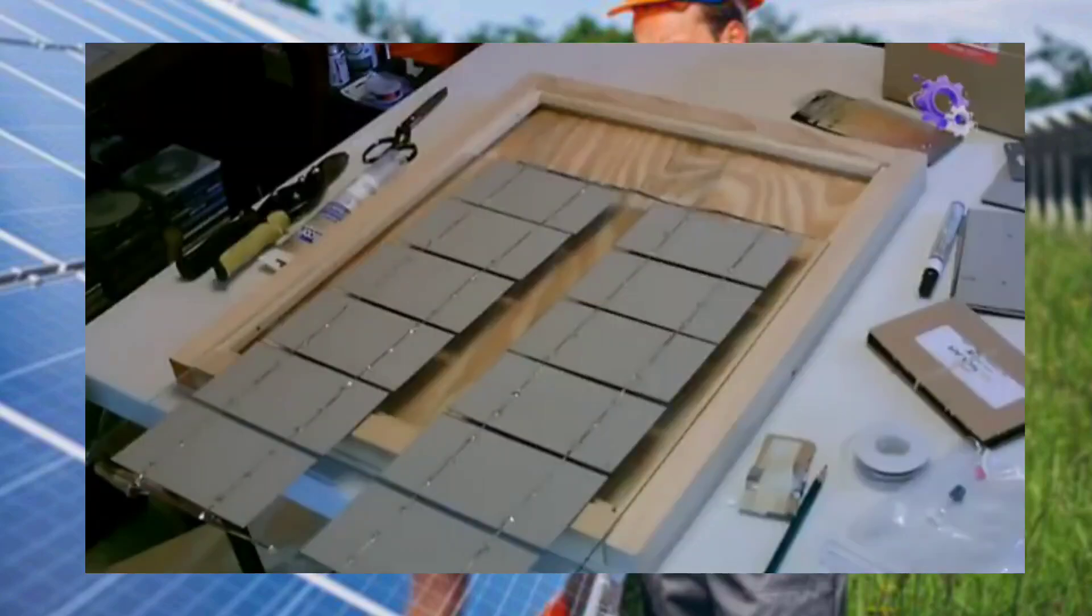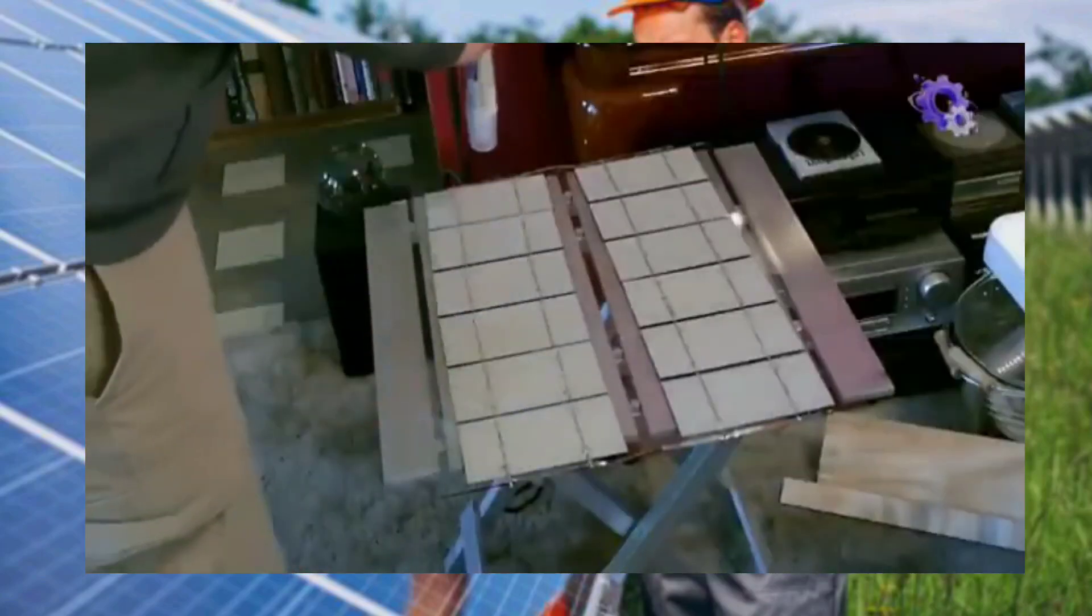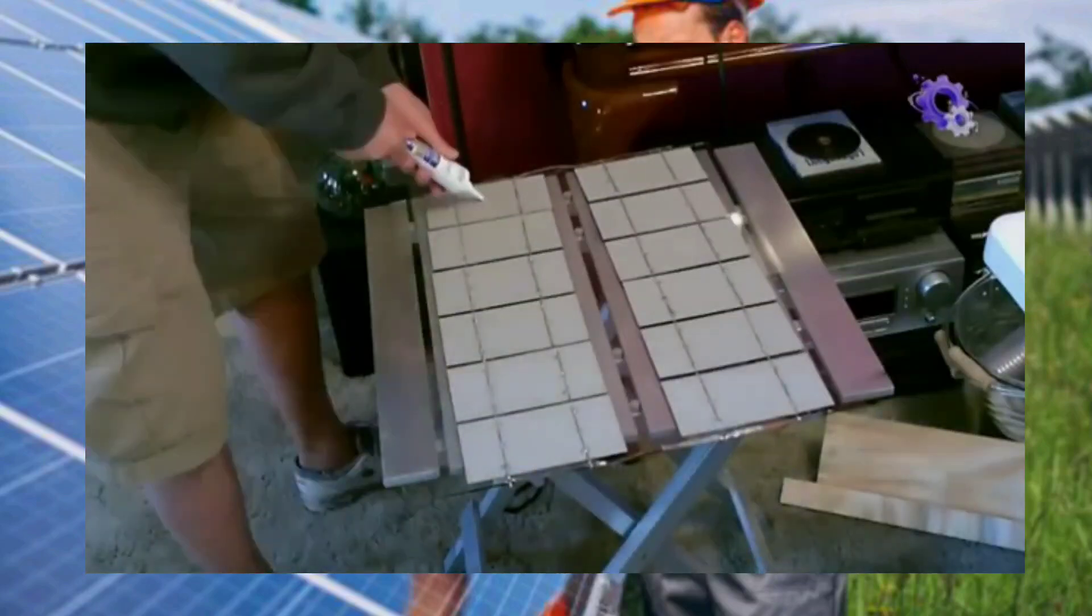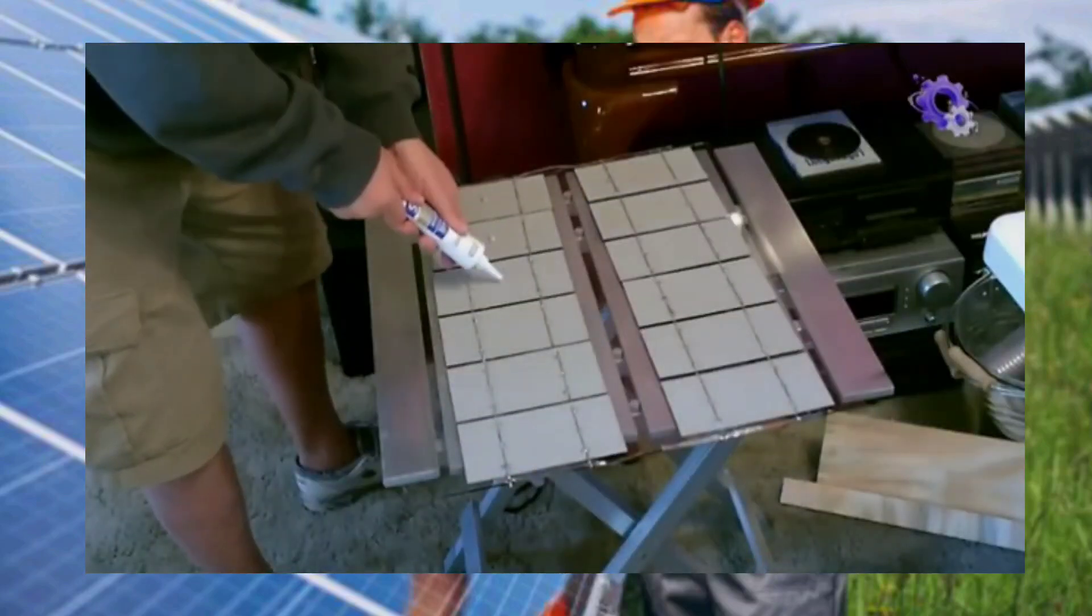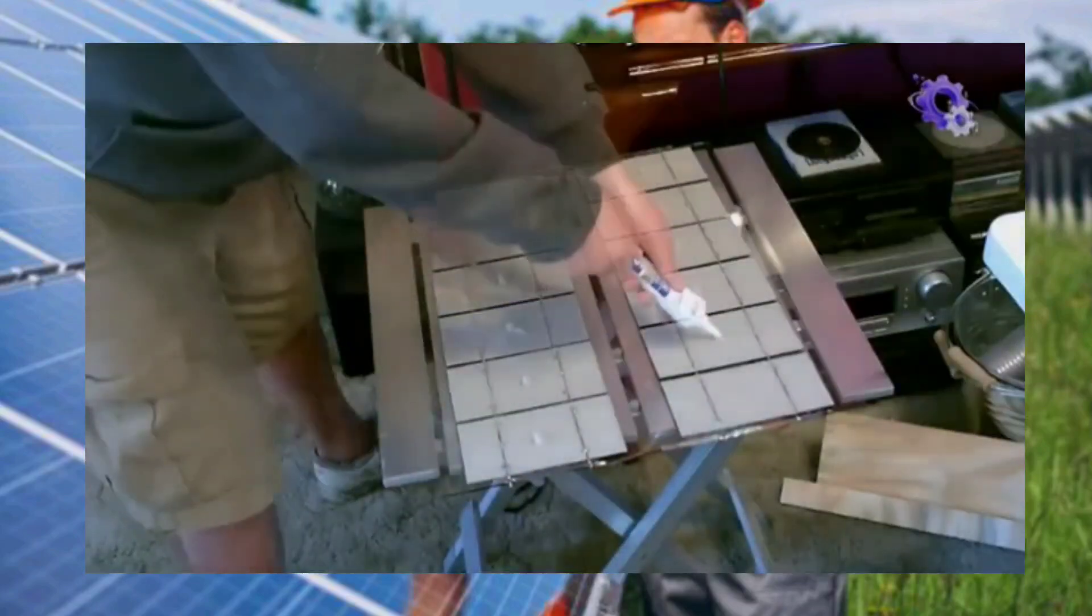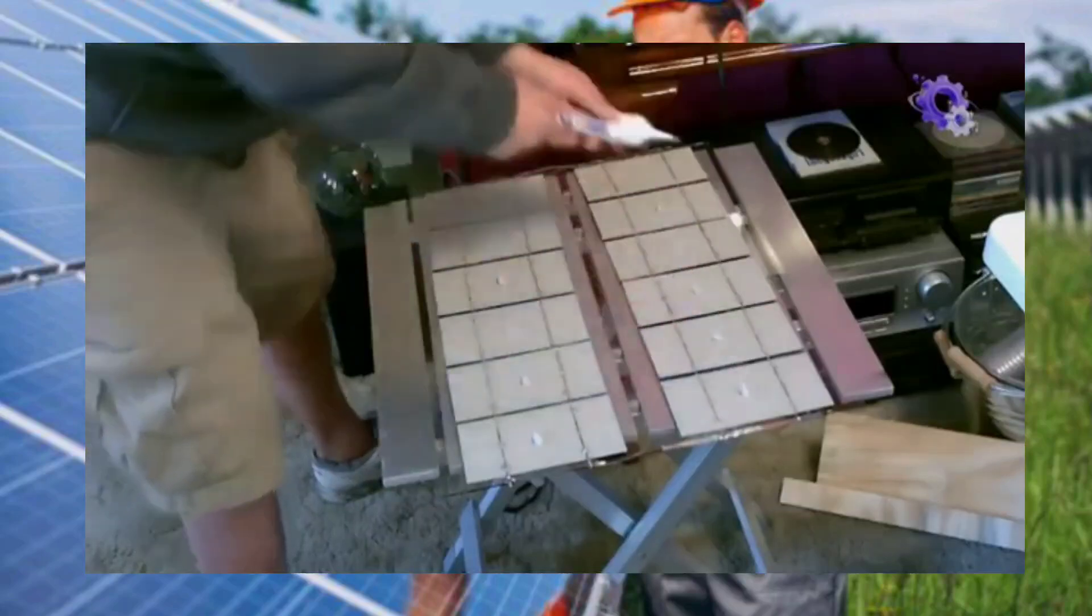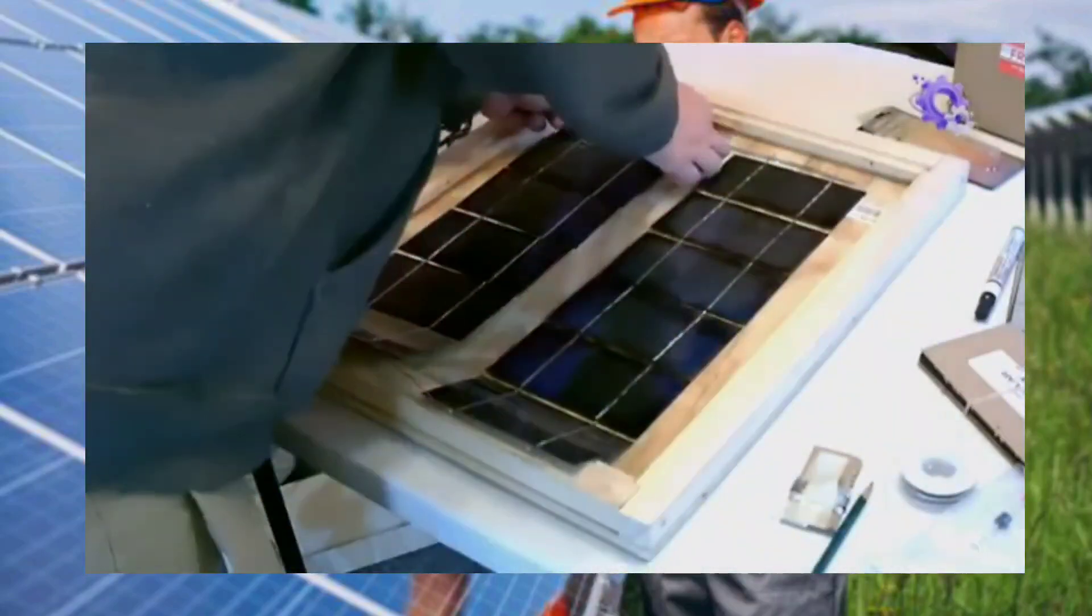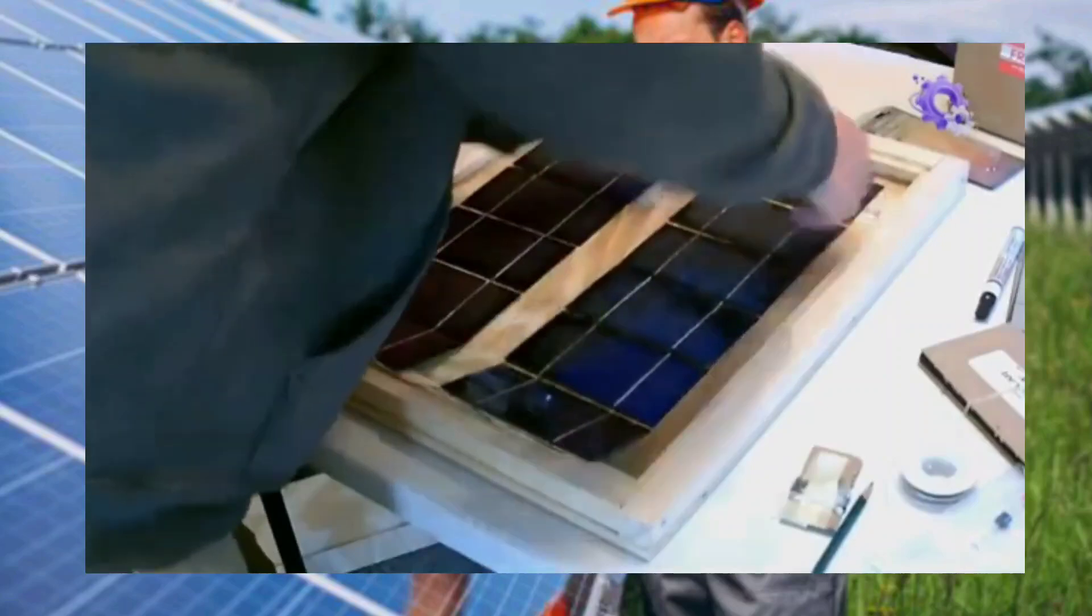Once all is done, encapsulation, which is protecting the solar cells from environmental elements, is crucial for longevity and performance. Affixing cells to a backing material and sealing panel edges with waterproofing materials like silicone shield against moisture ingress and enhance durability.